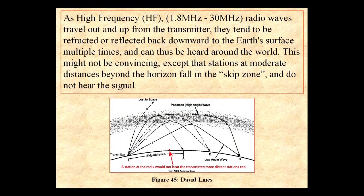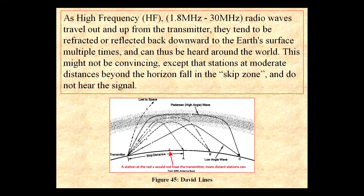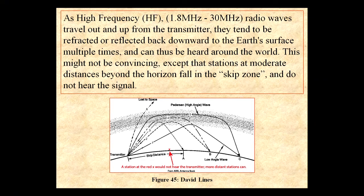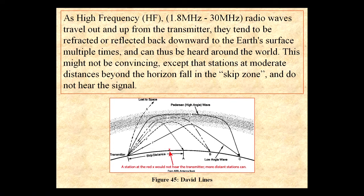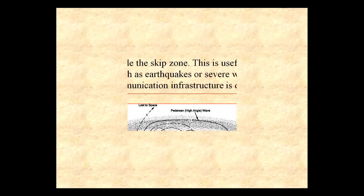Here's the transmitter in the schematic — the signal is reflected back multiple times and can be heard around the world. This might not be convincing except that stations at moderate distances from the horizon fall beyond the skip zone and do not hear the signal. That is incredibly important.